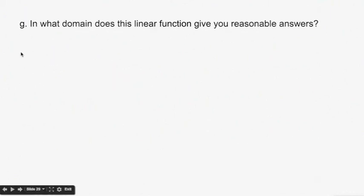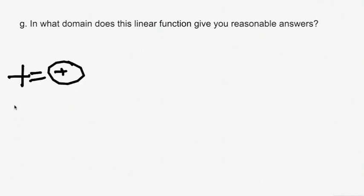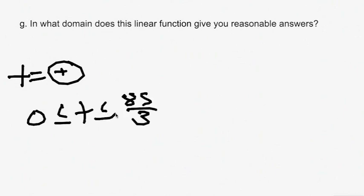Part G asks in what domain does this linear function give reasonable answers — for which values of T does the function apply? It applies when T is positive, so 0 is less than or equal to T, which is less than or equal to 85 thirds. The function would not apply for a negative time because you don't know what you're doing before you leave, and the problem doesn't provide that information.